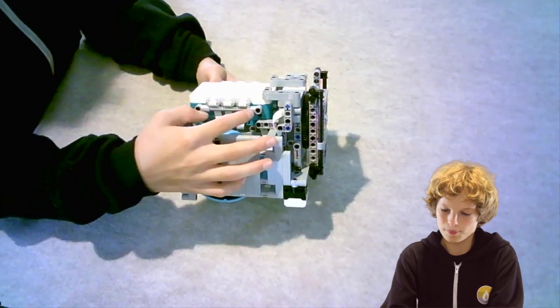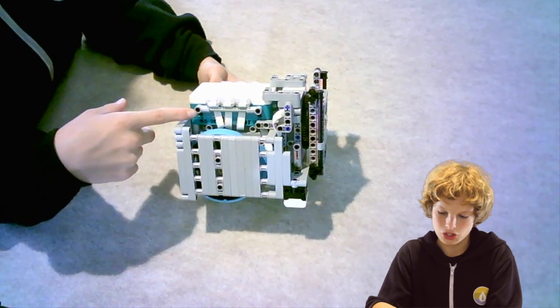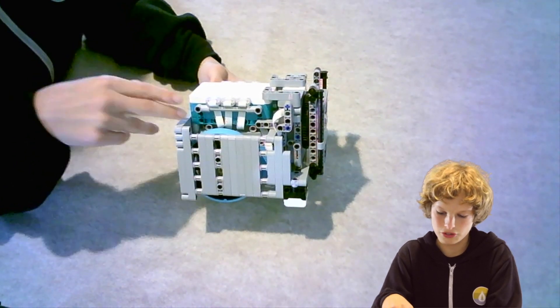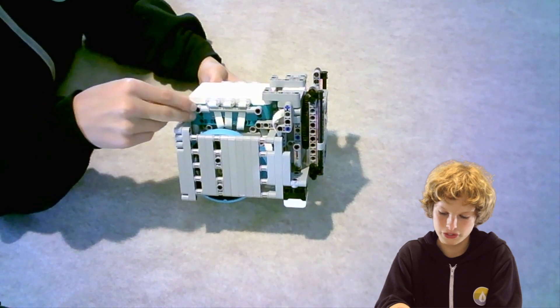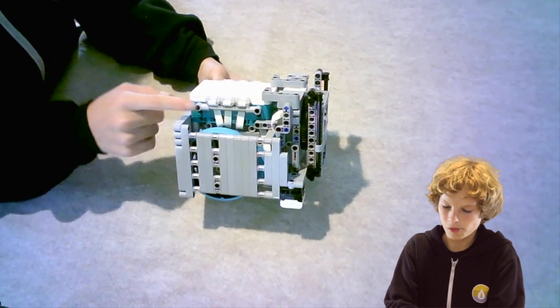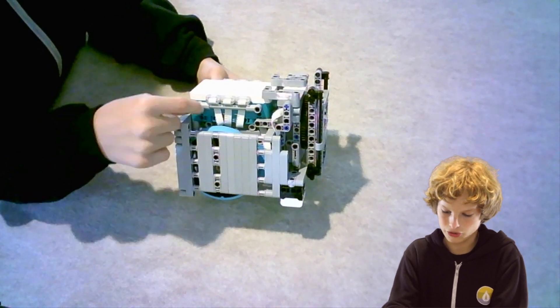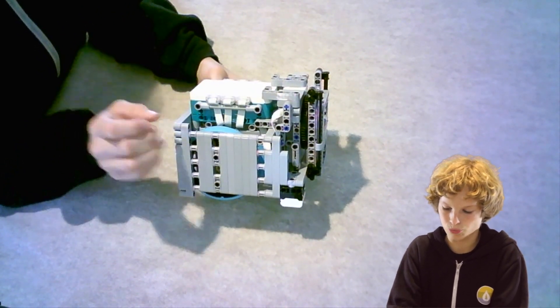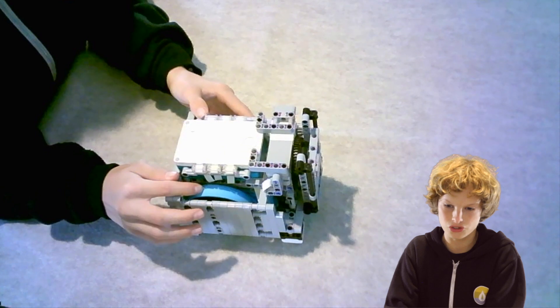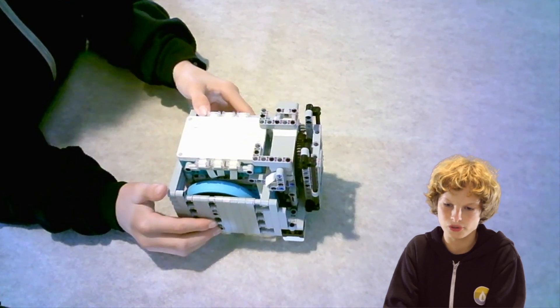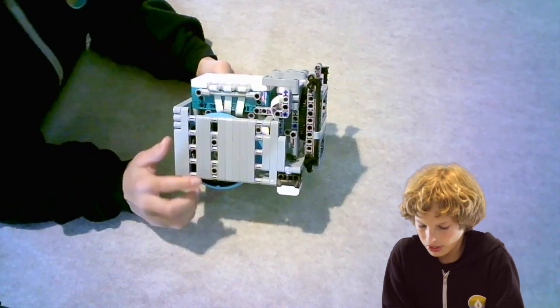An important thing about our robot is our cable management. We do two things to keep our cables neat and tidy. First thing is we use these bars right next to the ports to keep our cables away from our wheels so that they don't cause any drag.